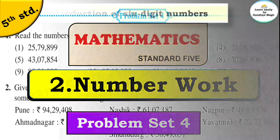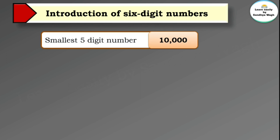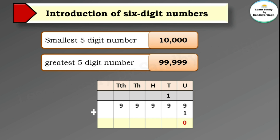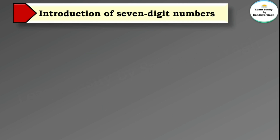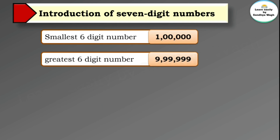In our previous video we learned how to read and write six-digit numbers. The smallest five-digit number is ten thousand and the greatest five-digit number is ninety-nine thousand nine hundred and ninety-nine. When we add one to the greatest five-digit number, we get one lakh — that is the smallest six-digit number. The greatest six-digit number is nine lakh ninety-nine thousand nine hundred and ninety-nine.